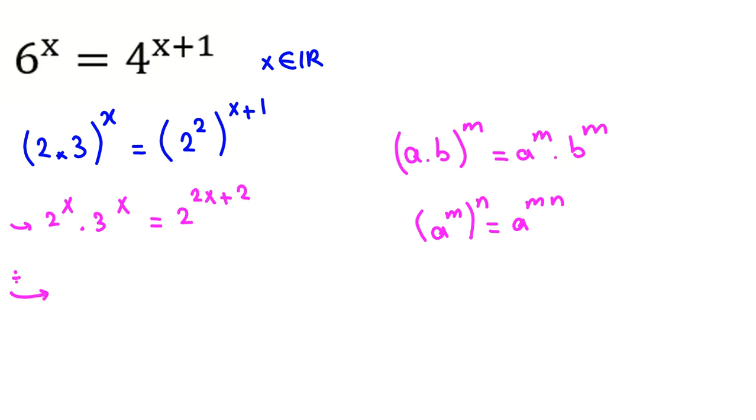Now we divide both sides by 2 to the x. For the left side, it will be cancelled, leaving 3 to the x.